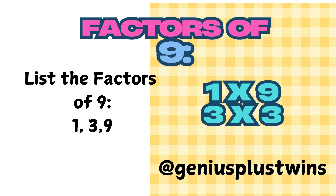Now we are going to find the factors of 9. I always start with 1, because 1 and the number itself will be my first pair of factors — in this case, 1 and 9, since 1 times 9 equals 9. Since 9 is an odd number, I know I cannot divide 2 evenly into 9; there would be a remainder, so I move on to 3. 9 divided by 3 equals 3, and 3 times 3 equals 9, so 3 is also a factor. When listing factors, I only write 3 once. So the factors are 1, 3, and 9.